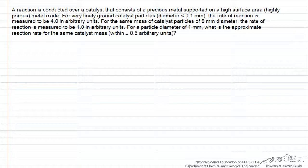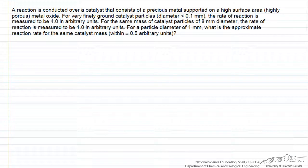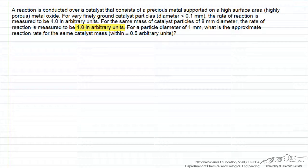This is a problem dealing with internal effectiveness factors and diffusion limitations in porous catalysts. We start with very finely ground catalyst particles where we expect little diffusion limitation and observe a reaction rate of 4.0 in arbitrary units. Using the same mass of particles but in a pelletized form where they are larger in diameter, the reaction rate is one quarter that of the small pellets. The question is: for a particle diameter of one millimeter, what is the approximate rate for the same catalyst mass?